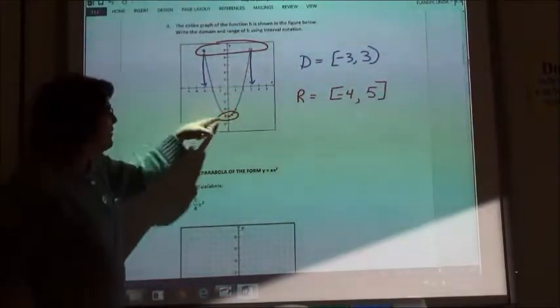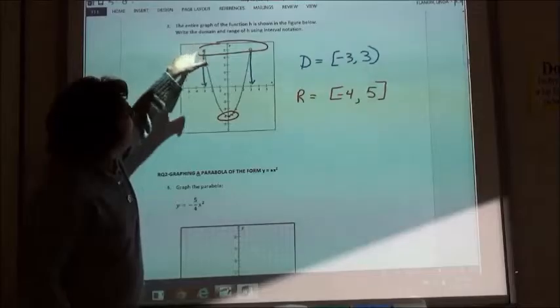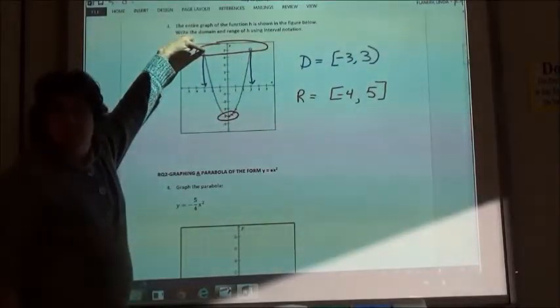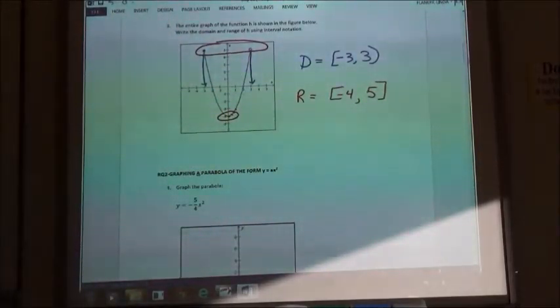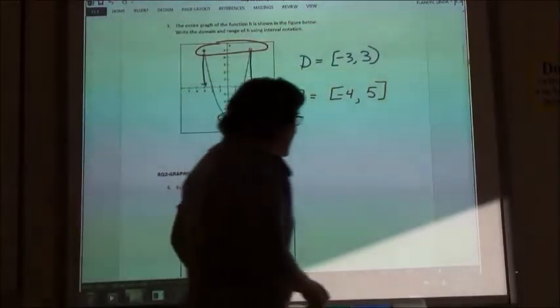So if it's in the middle of the graph or if I've got more than one end and if any of them is filled in, then you are going to use the bracket on that. So my range, negative 4 to 5 brackets on both ends.